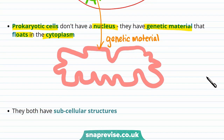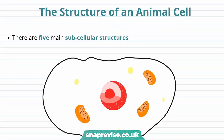The key thing is that both eukaryotic and prokaryotic cells have subcellular structures — these are structures inside the cell that help it function. In this video, I'll be talking about the different subcellular structures found in eukaryotes and prokaryotes. So first, let's talk about the structure of an animal cell.